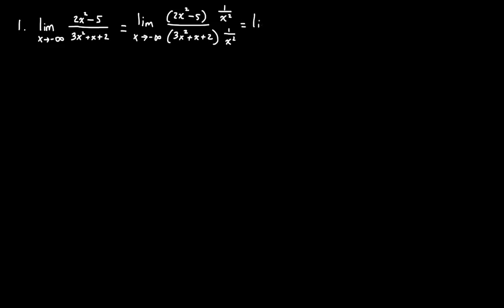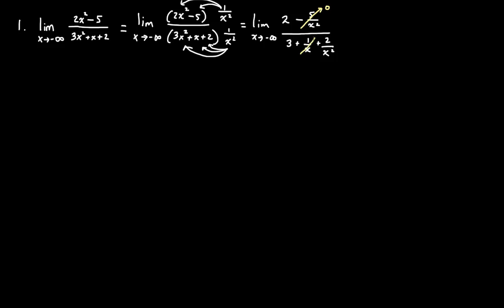Once we have that, that's going to equal the limit as x approaches negative infinity. I'm going to distribute this to all the terms. When I do that, I get two because the x squareds cancel out, then five over x squared in the numerator. For the denominator, distributing gives three plus one over x plus two over x squared. We know that a number over infinity — negative infinity squared is still infinity — so those terms go to zero. Consequently, this whole thing will go to two-thirds.